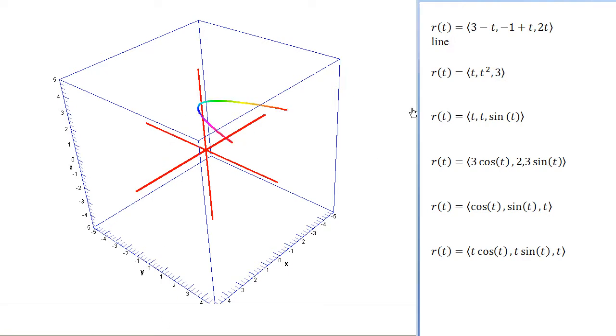Okay, so now let's look at the next one. So here we're looking at t, t squared, and 3. And so notice that the z value is constant. And so the z value is going to be 3, no matter where we are on the graph.